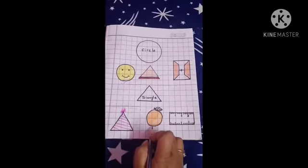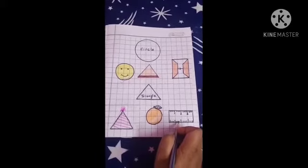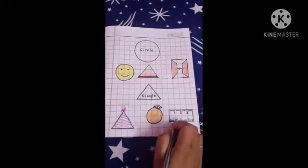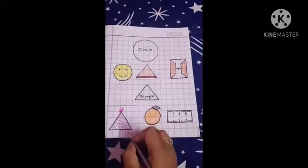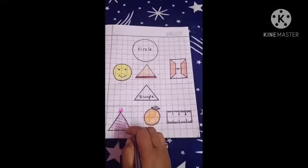This is orange. This is circle in shape. And this is ruler. This is rectangle in shape. So we have to put a tick on similar shape with triangle. Yes, put a tick on birthday cap. This is triangle in shape.